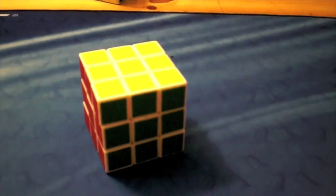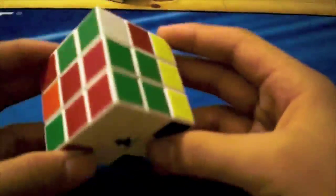Okay, so this is going to be a quick explanation about how to make an extended cross. The extended cross is basically this, where you have the cross on the bottom or the top, however you solve it, and then one F2L pair is already inserted.